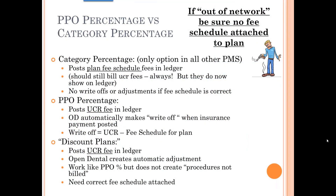Now that we've gone over how these work, which one should you use? In our experience, offices have a lot fewer problems when they use category percentage. I like the PPO percentage because you can show the patient how much they save by having the treatment done in your office, and your reports will show how much it costs you to belong to that plan. However, offices have a great deal more difficult time dealing with PPO percentage. So for most offices, we still recommend category percentage because it's easier for the office to deal with, and they tend to make fewer mistakes.